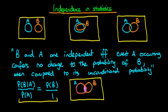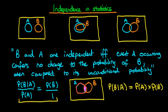In other words, being in event A or event A occurring confers no additional information about the probability of event B occurring. We can multiply out this relationship to get the mathematical definition of independence, which is that the probability of B given A is equal to the probability of A times the probability of event B. So that's the intuition and mathematical definition of events being independent.